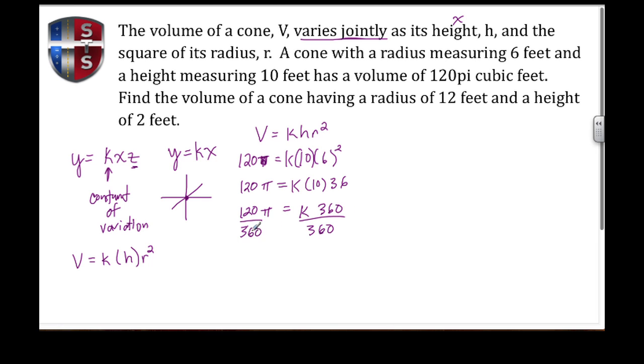10 times 36 is 360. To isolate k, I divide both sides by 360. Those cancel, leaving me with k equals 120π divided by 360.